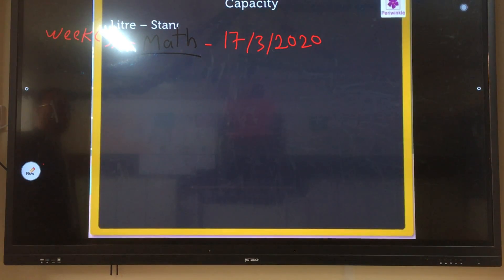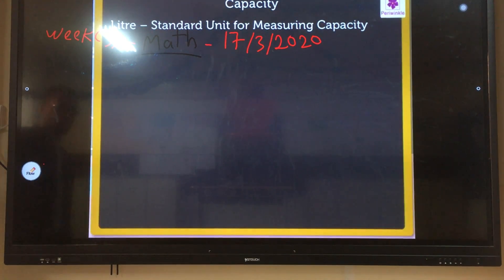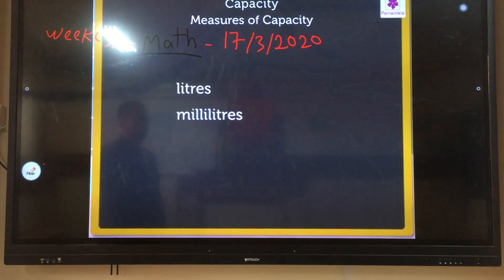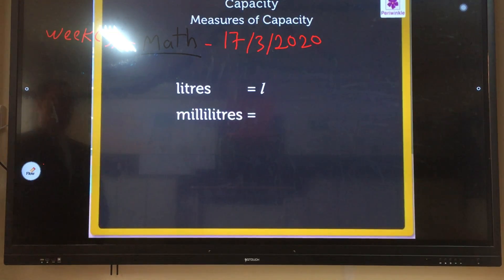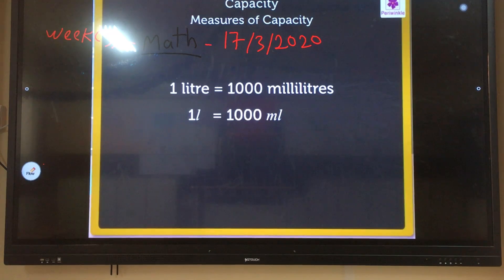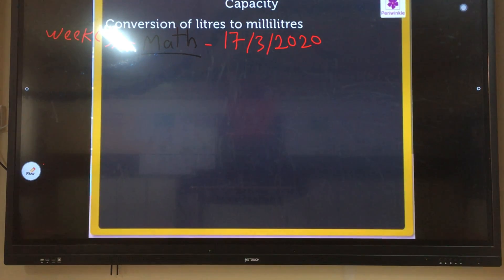The amount of liquid a container can hold is called its capacity. Here, the amount of water that the jar is holding is called the capacity of the jar. Liter is the standard unit for measuring capacity. We measure the capacity of a container in liters and milliliters. A liter is represented like this. A milliliter is represented like this. Liter is the bigger unit and milliliter is the smaller unit of capacity. We know that one liter is equal to one thousand milliliters. To change liter to milliliter, we multiply liter by one thousand.